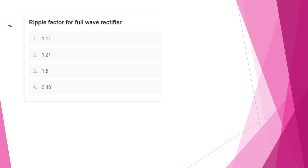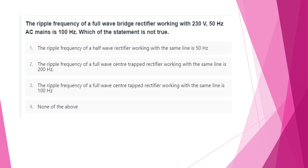The output frequency of a full-wave rectifier working with 230V input: the ripple frequency is 2F = 100 Hz. The output frequency of a full-wave rectifier is always double the input AC frequency.